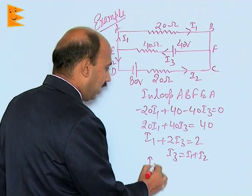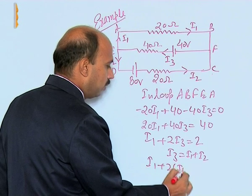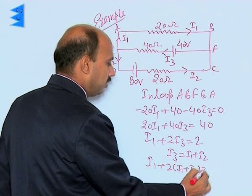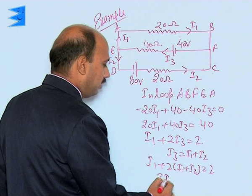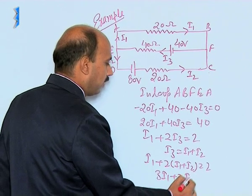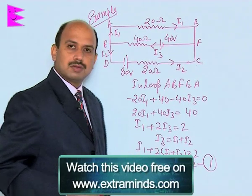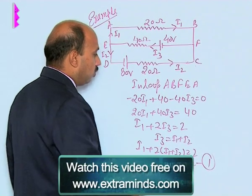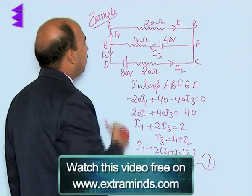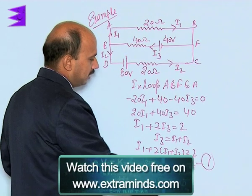I3 is equal to I1 plus I2 by using the junction rule. We can write I1 plus twice of I1 plus I2 is equal to 2, that is thrice of I1 plus twice of I2 is equal to 2. This is the first equation we have obtained from loop 1, A B F E A.